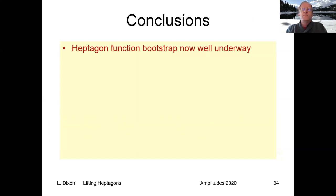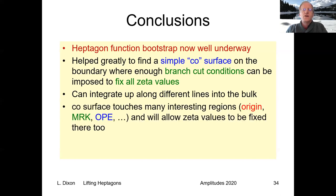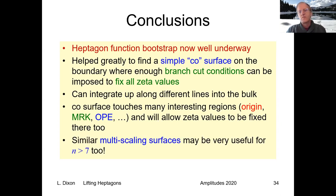In conclusion, the heptagon function bootstrap is now well underway. This CO surface played a key role. We can integrate up along different lines into the bulk. We'll be able to check these various limits: origin, MRK, and operator product expansions, and study everything at full function level in a little while. These similar multi-scaling surfaces may be very useful for more than seven points. Thank you very much for your attention.